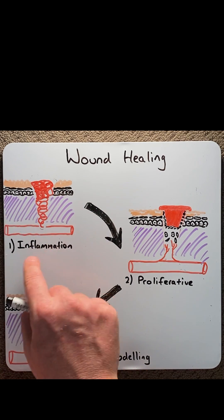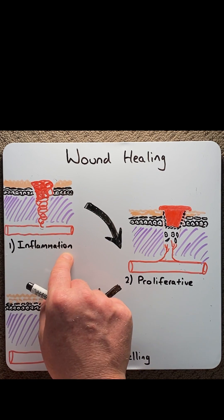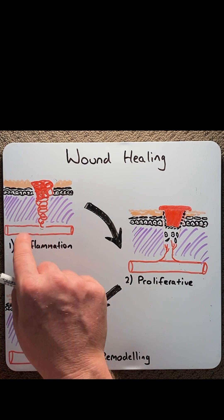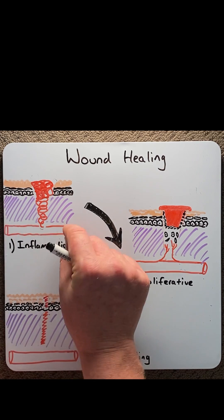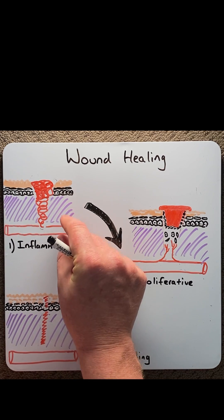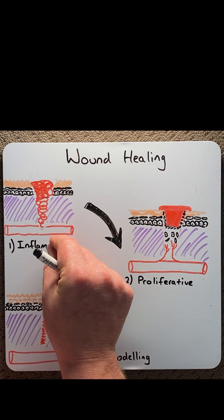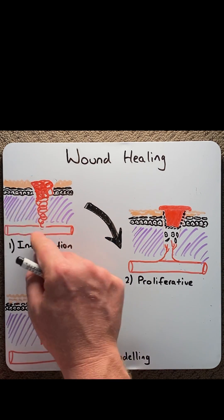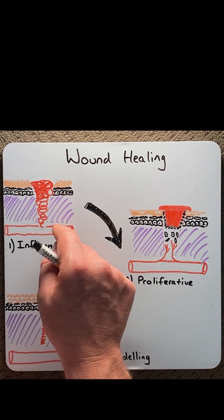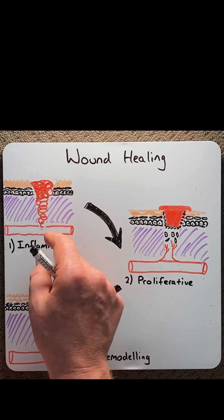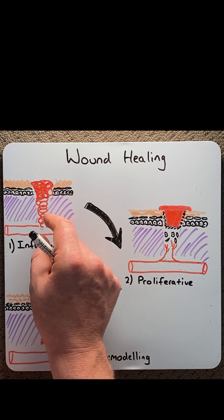The next part of the inflammatory phase is acute inflammation. This is where the blood vessel would dilate and bring more cells into the area, causing the wound to become hot, swollen, and red.